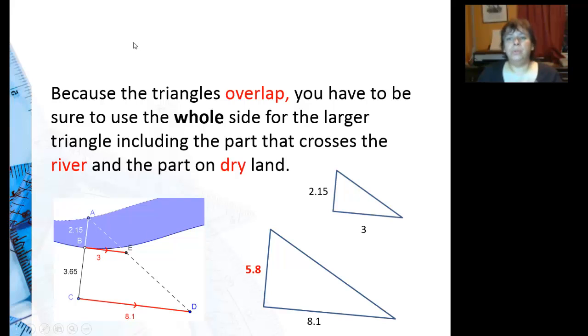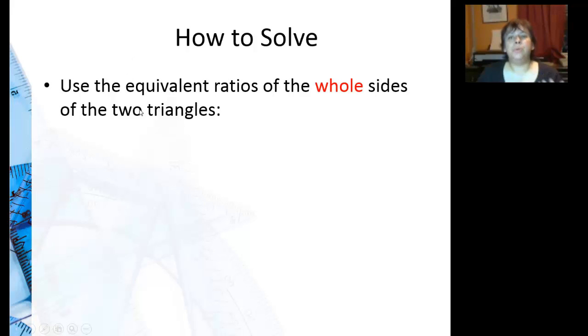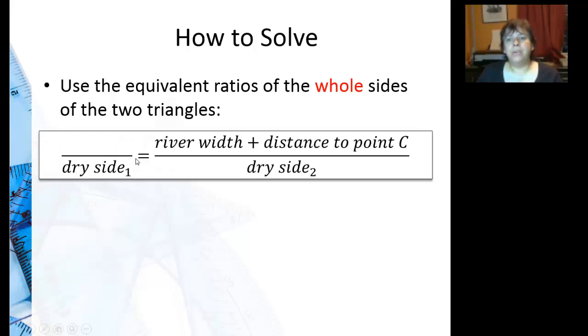So to solve problems involving the overlapping triangles, be sure to use the whole sides. And you're going to set up your proportion where you have the small triangle, we'll call it triangle one, over the large triangle, triangle two. And for the large triangle, remember it's river width plus distance to point C. For the small triangle, just the river width is the whole side.